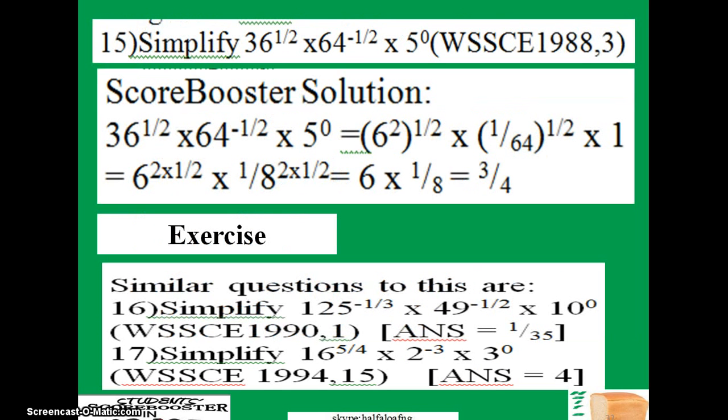So let's quickly look at another question which is similar to what we have done before. Simplify 36 raised to power one-half times 64 raised to power minus one-half times 5 raised to power 0. Our solution: we just repeat the question here and after that find the factors of 36, and that is 6 raised to power 2.